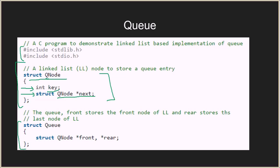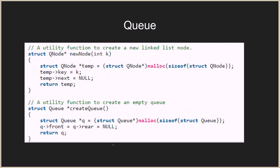We also have a structure queue, which contains both the front and the rear pointers. You'll have a linked list of queue nodes, and the front and rear of the queue structure will maintain the front and rear pointers. Let's now look at how we create a new node.